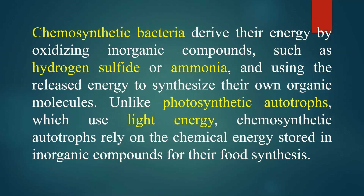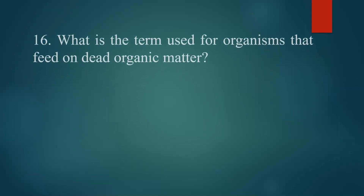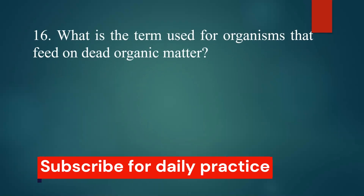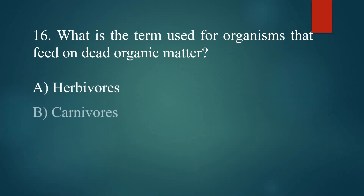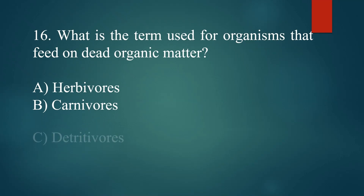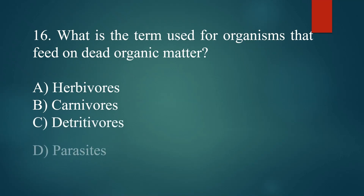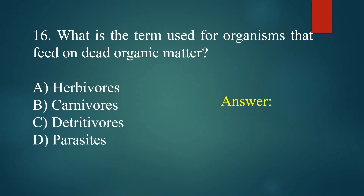Unlike photosynthetic autotrophs, which use light energy, chemosynthetic autotrophs rely on the chemical energy stored in inorganic compounds for their food synthesis. What is the term used for organisms that feed on dead organic matter? A. Herbivores. B. Carnivores. C. Detritivores. D. Parasites. Answer: C. Detritivores.